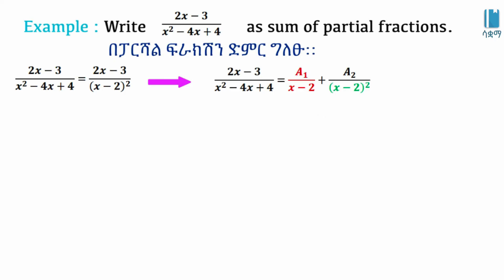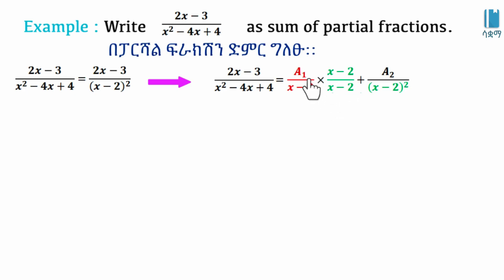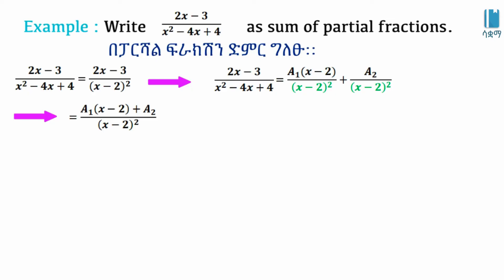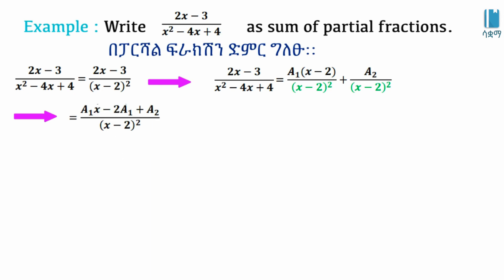Multiplying both sides by the denominator x minus 2 squared, the term A1 over x minus 2 becomes A1 times x minus 2 over x minus 2 squared. Simplifying, we get A1 times x minus 2 plus A2, which expands to A1·x minus 2·A1 plus A2.